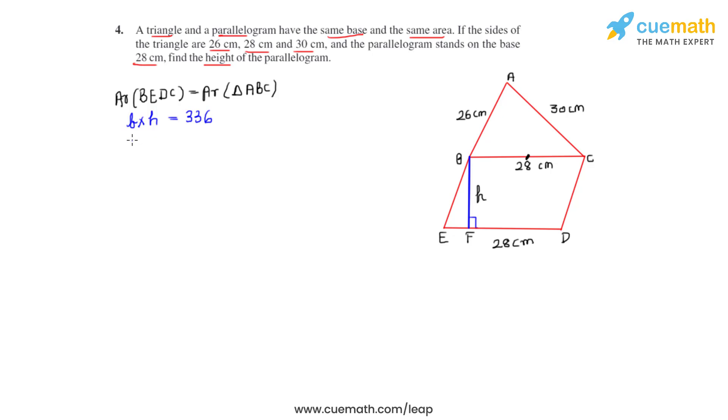As the value for base is 28, let's substitute that. We write 28 times H equals 336. So H equals 336 divided by 28. So we get the height for the parallelogram BEDC to be equal to 12 centimeters. And this is the correct answer for this question.